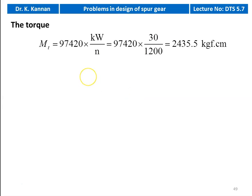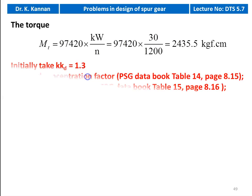Now we calculate the torque to be transmitted by the gear. MT equal to 97,420 into power in kilowatt divided by the pinion speed: 97,420 into 30 divided by 1200 equals 2435.5 kilogram force centimeter.